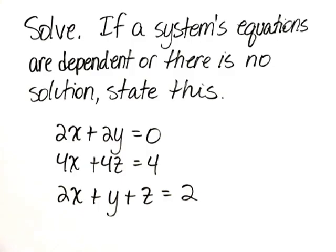Solve. If a system's equations are dependent or there is no solution, state this. 2x plus 2y equals 0. 4x plus 4z equals 4. 2x plus y plus z equals 2.